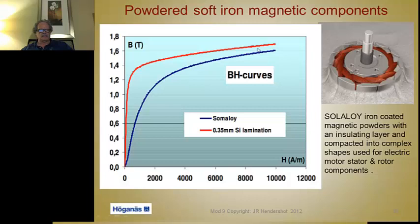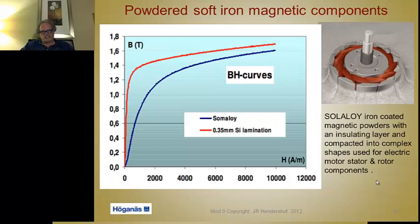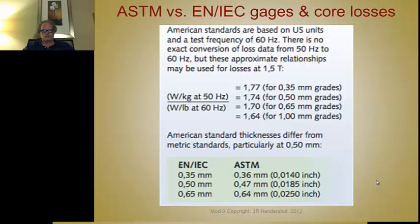Here's a BH magnetization curve comparing Somaloy (the blue line) with 29-gauge silicon steel lamination (the red line). You can see it takes more ampere-turns per meter — more electrical power — to magnetize the Somaloy material, but it reaches a pretty decent flux density. The silicon steel takes less energy to magnetize, which is significant for a brushless or induction motor, but not so important for a permanent magnet motor since it's magnetized from magnet flux rather than electromagnetic flux.